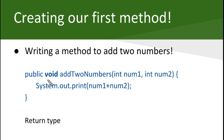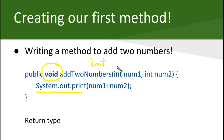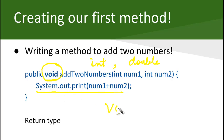The next thing is the return type. This method is printing something, but is the method returning it? This is the part where you specify the return type. If the method is returning an integer you specify 'int'; if it is returning a double you specify 'double'. But in this case it is just printing something — it takes two numbers and prints them — so it is not returning anything. When the method is not returning anything, the return type is 'void'.